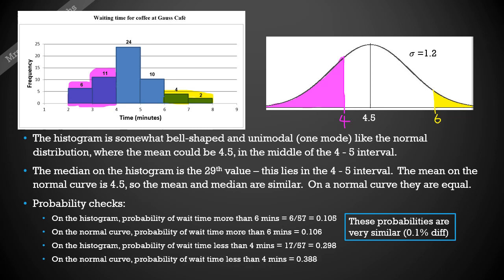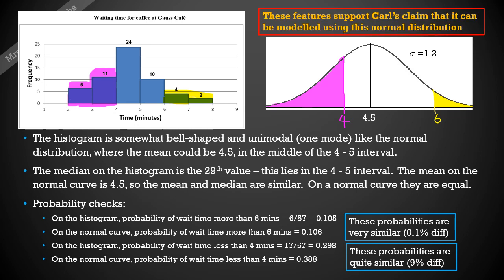With our regular calculations we work out that that comes out to be 0.388. These probabilities are quite similar. It's not as good as the first one that we did, but there's only a nine percent difference. So all of these features would support Carl's claim that it can be modeled using the normal distribution that he suggested.